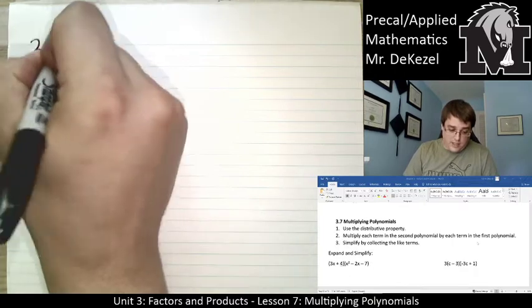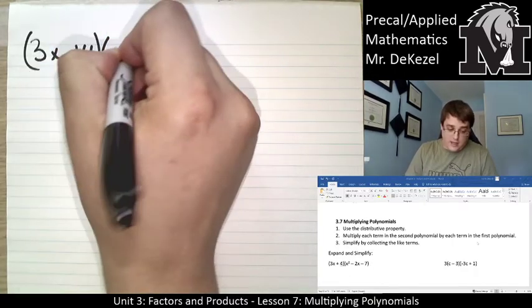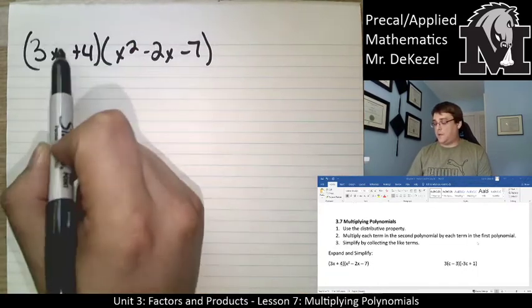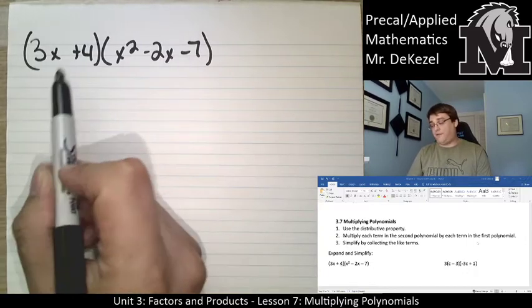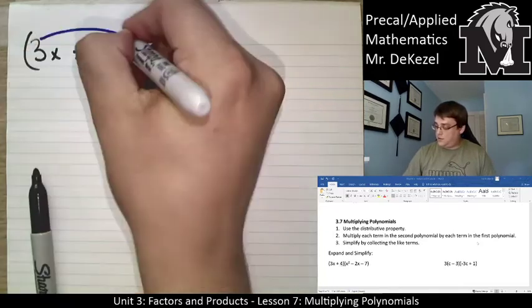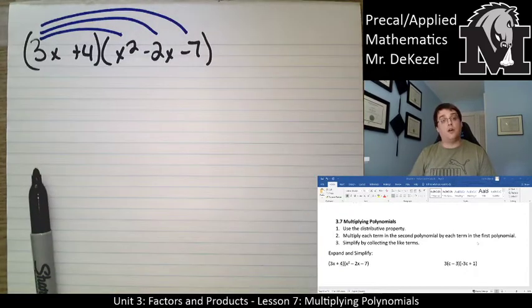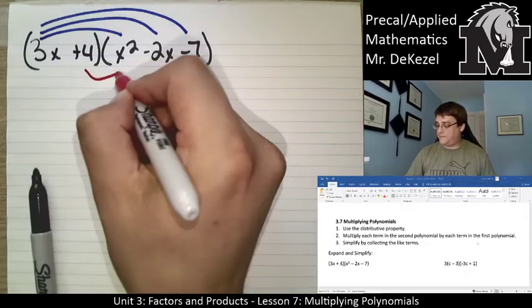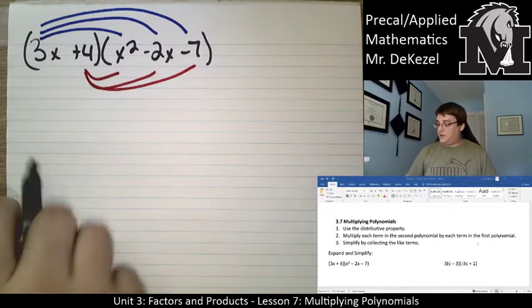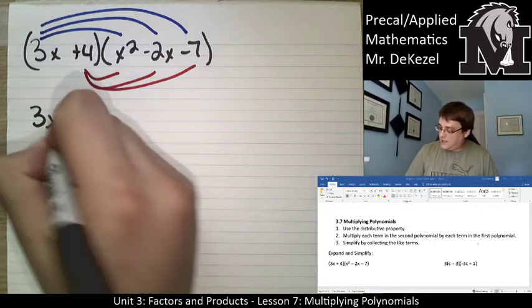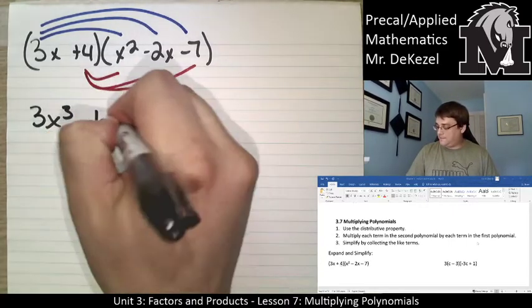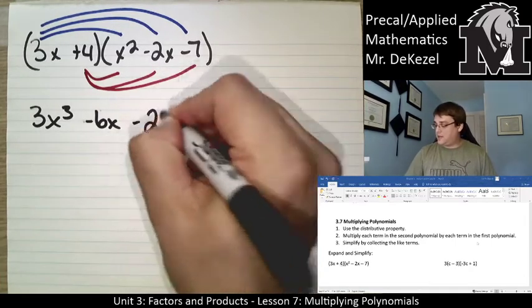Let's do 3x plus 4 and x squared minus 2x minus 7. So essentially what we'll do is we'll take 3x and multiply it by all three of these. We'll take 4 and multiply it by all three of these. Here we go. So 3x times x squared is 3x cubed. 3x times negative 2x is negative 6x squared. 3x times minus 7 is minus 21x.